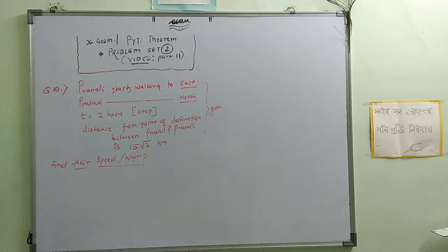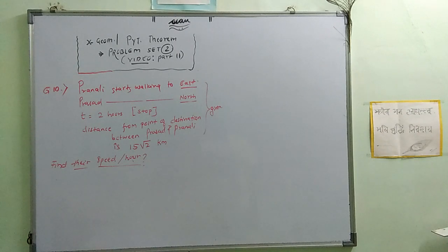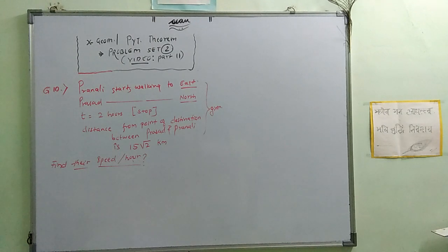Dear students, next question from problem set 2 is question number 10 of geometry. This question says that Pranali starts walking to the east at the same time Prasad starts walking towards the north. So let's solve and see how they walk.